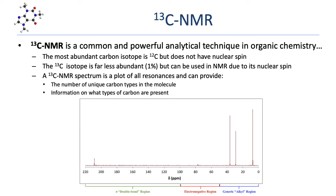There are several types of nuclei that can be investigated using NMR spectroscopy. One of the most useful techniques for organic chemists is C13 NMR. The most abundant carbon isotope is carbon-12, but it doesn't have a nuclear spin. The C13 isotope represents about 1% of carbon in nature, but it can be used in NMR because it does have a nuclear spin. A C13 NMR spectrum is a plot of all of the resonances for a given sample, and it can provide information about the number of unique carbon types in a molecule and a little bit of information about what types of carbon are present.